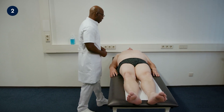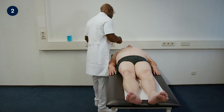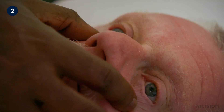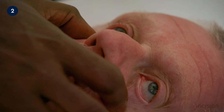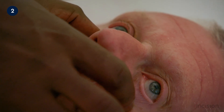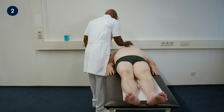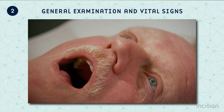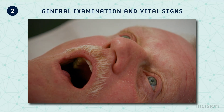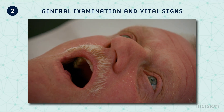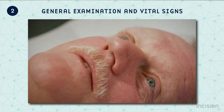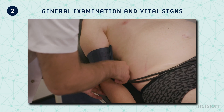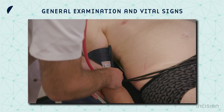The face is then examined, looking again for general signs of systemic pathology, such as conjunctival pallor, weight loss and the presence of jaundice. For a detailed description of the various components of a general examination, refer to the course General Examination and Vital Signs.